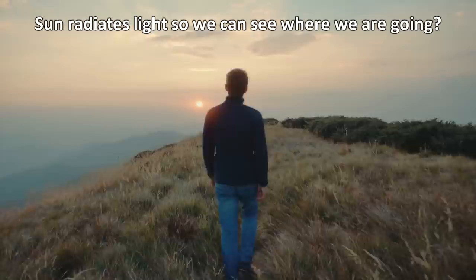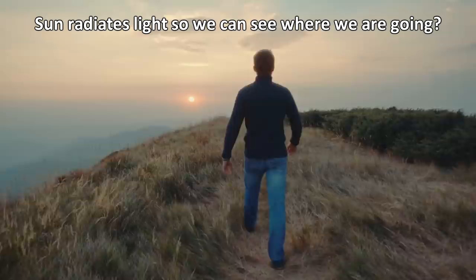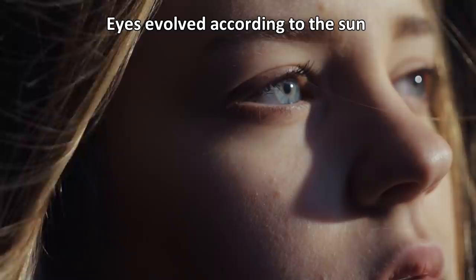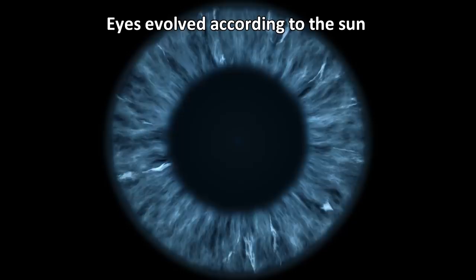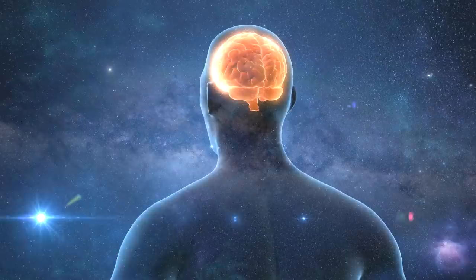The fine-tuning argument seems to be saying something analogous to the idea that the sun radiates light so that we can see where we're going. In fact, the human eye evolved to be sensitive to light from the sun because that's what gave us an evolutionary advantage. The sun is not fine-tuned for our eyes. Our eyes are fine-tuned for the sun. Similarly, the universe is not fine-tuned for humanity. Humanity is fine-tuned for the universe.